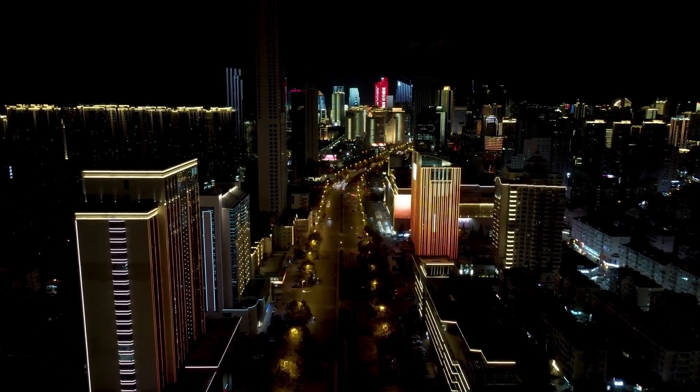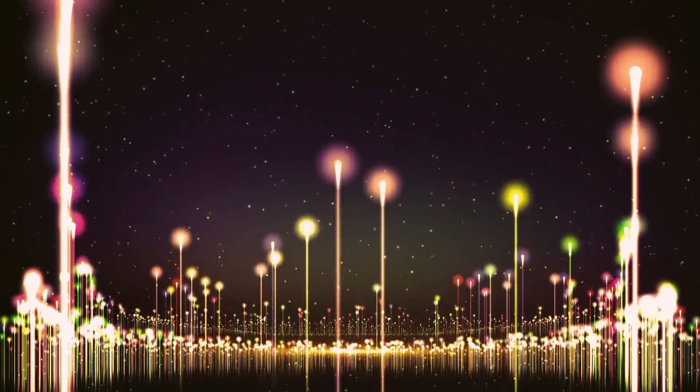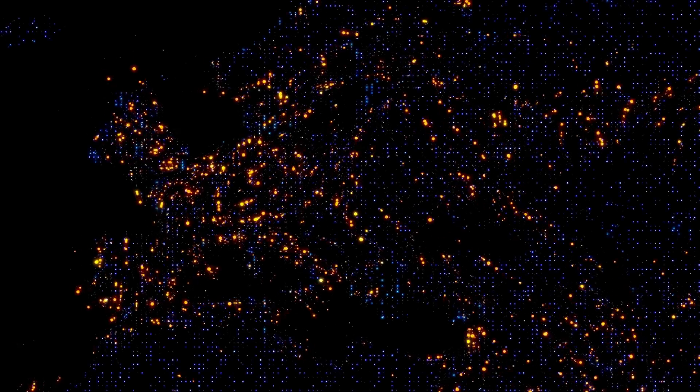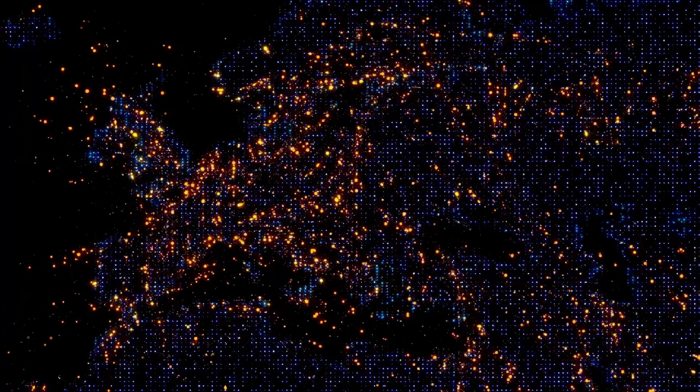Avi Loeb, Harvard astrophysicist and author of the Loeb Scale, had already rated 3.I Atlas a 4 out of 10 on the likelihood of being artificial. Then, after these new anomalies, the IAWN quietly upgraded it to a priority target. Hundreds of telescopes were redirected to track it, as if Earth itself were preparing for something we weren't supposed to see coming.